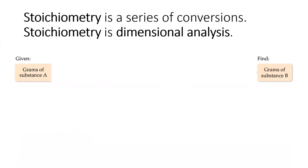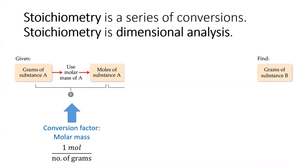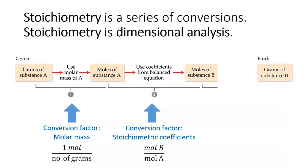Stoichiometry is a series of conversions. In other words, to do stoichiometry, you have to do the dimensional analysis dance. The common stoichiometry roadmap goes as follows. We will be given the grams of one substance in a chemical reaction. We will then use the molar mass to convert to moles of that substance. Then we'll use the chemical equation like a recipe, which tells us the relationship between moles of each substance in a reaction.